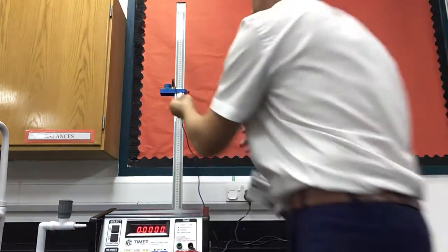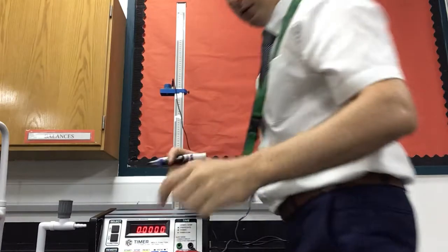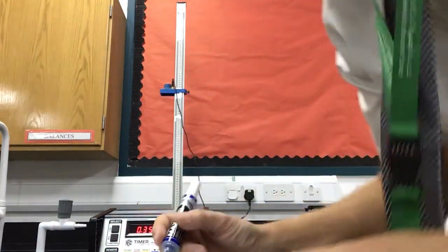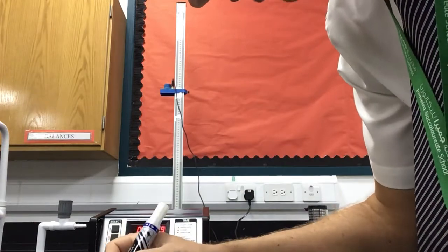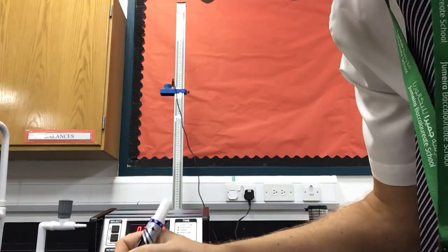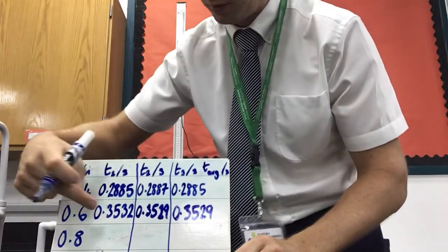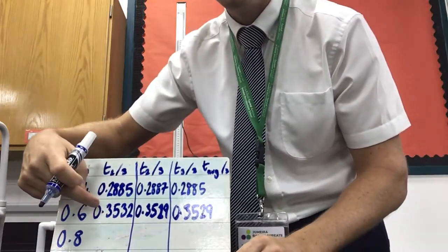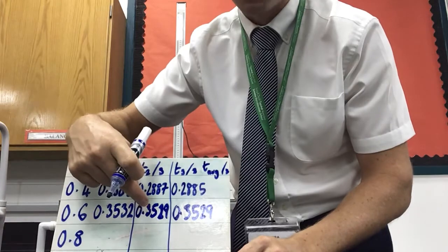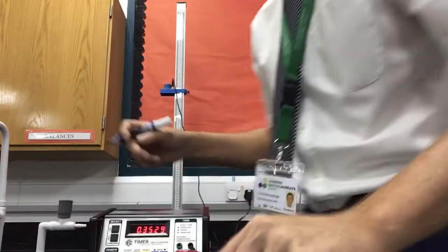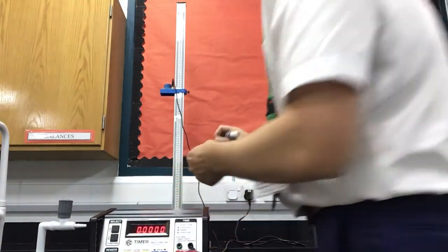Reset. Third reading. 0.3529. So there we have it. 0.3532, 0.3529, 0.3529.